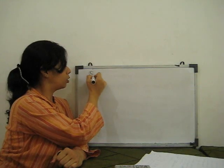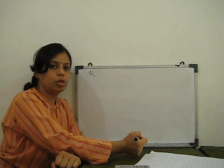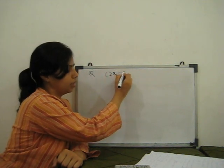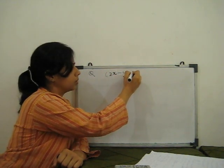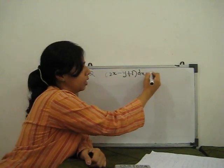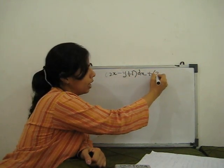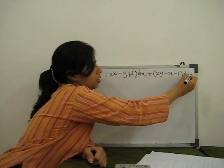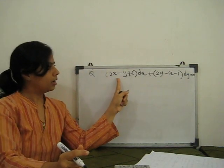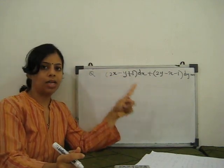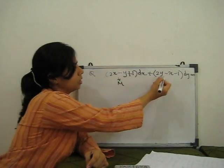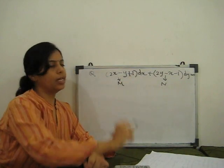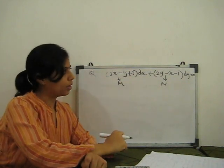I previously solved this example using reducible to homogeneous. The equation is: (2x minus y plus 1) dx plus (2y minus x minus 1) dy equals 0. This is in the form M dx plus N dy, so our M is (2x minus y plus 1) and N is (2y minus x minus 1).